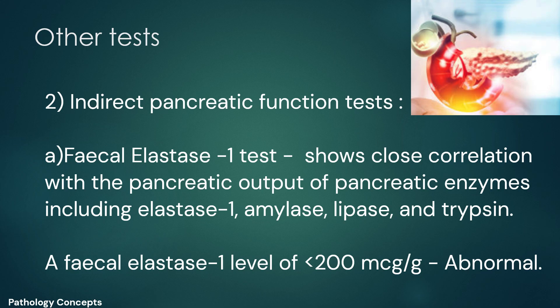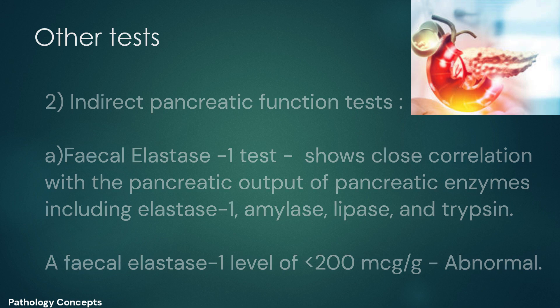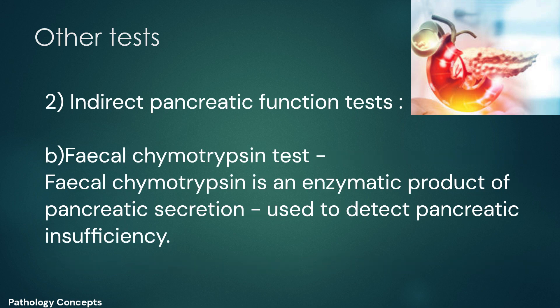The indirect pancreatic function tests include the fecal elastase-1 test. The measurement of fecal elastase-1 shows close correlation with pancreatic output of enzymes including elastase-1, amylase, lipase, and trypsin. A fecal elastase-1 level of less than 200 micrograms per gram is considered abnormal. The fecal chymotrypsin test is another enzymatic product of pancreatic secretion that can be used to detect pancreatic insufficiency.